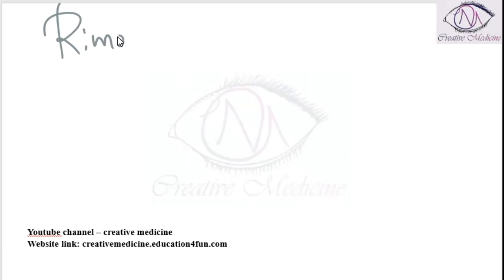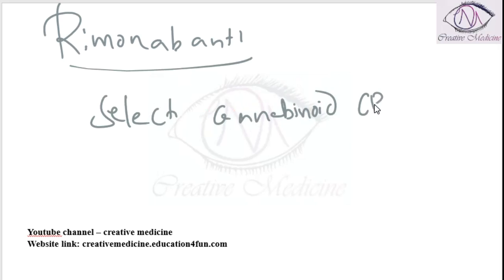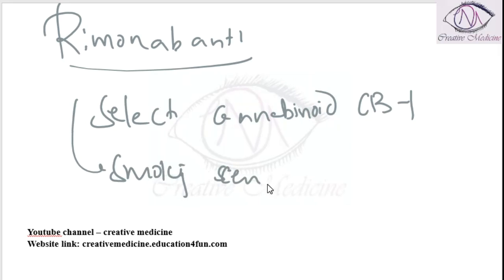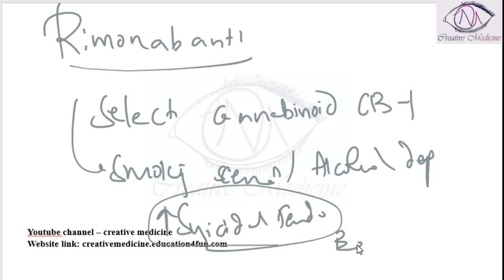Then we have rimonabant, which is a selective cannabinoid CB1 receptor antagonist. It is also used in smoking cessation and alcohol dependence, but it increases the risk of suicidal tendencies and is therefore banned.